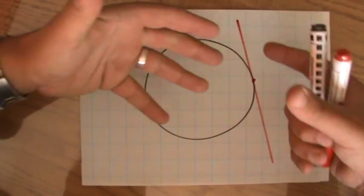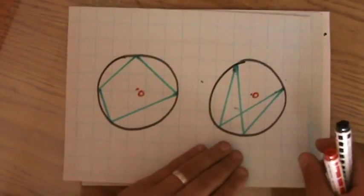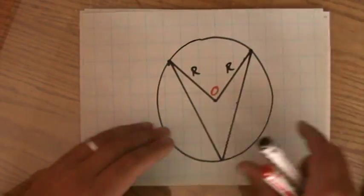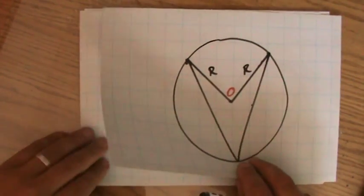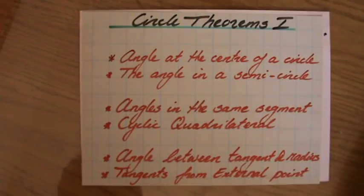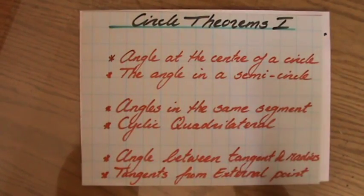Anyway, so again, very different compared to these two angles in the same segment, cyclic quadrilateral, and this one, which is angles at the center of a circle. So that's all you need to know. And I'm going to explain in the next few videos each theorem separately.